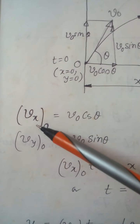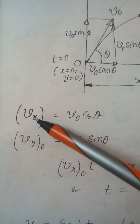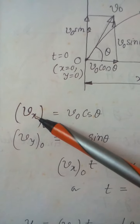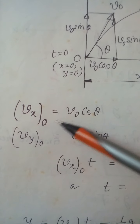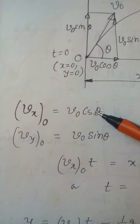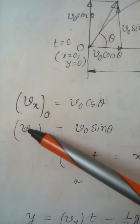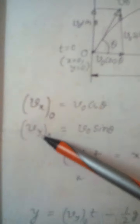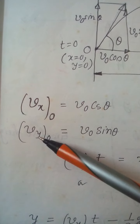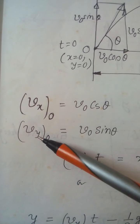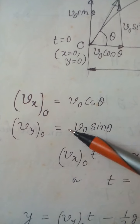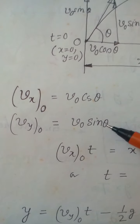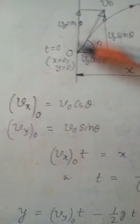The x-component of velocity at time t equal to zero is vx = v0 cos theta, and the y-component of velocity at time t equal to zero is vy = v0 sin theta.